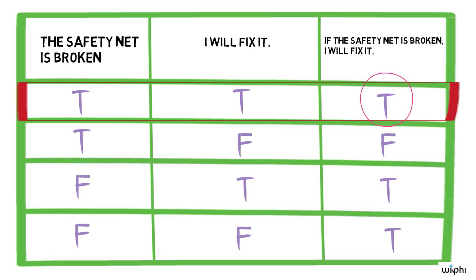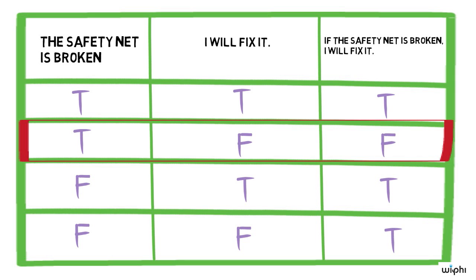Line two tells us what truth value the conditional has when the safety net needs repair and Romney doesn't fix it. It says that the conditional is false in this case. Reflect on your intuitions.